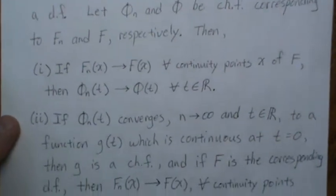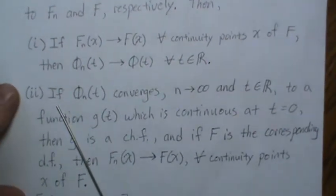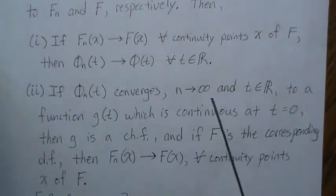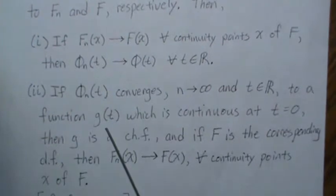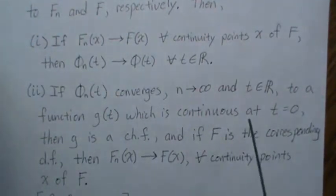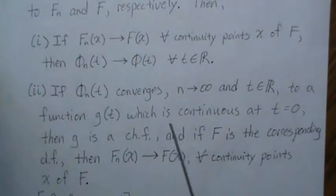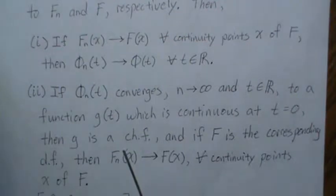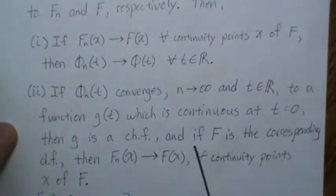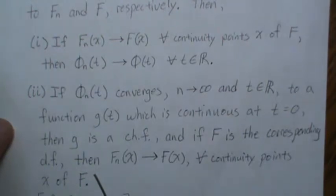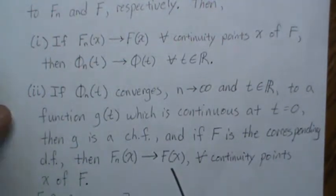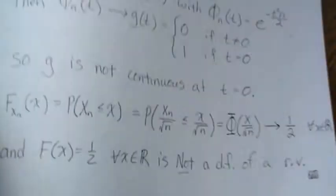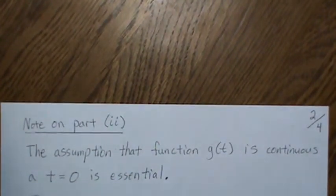To go backwards: if the characteristic functions of our sequence converge to a function g(t) which is continuous at t equals zero — note that assumption, we're going to come back to that — then g is a characteristic function. If F is the corresponding distribution function, then Fn converges to F at all continuity points of F.